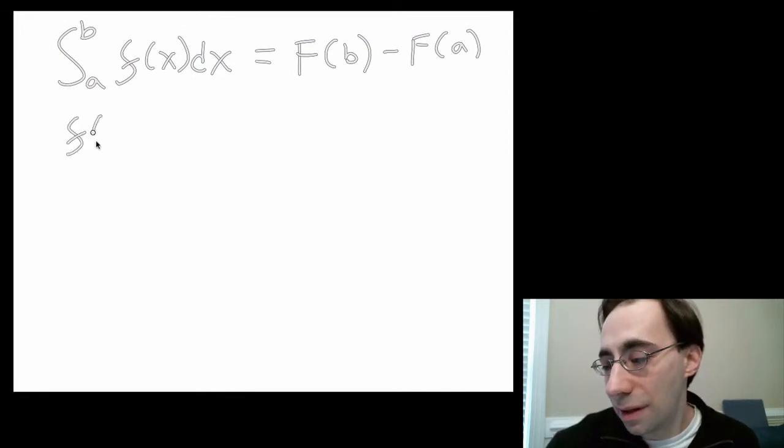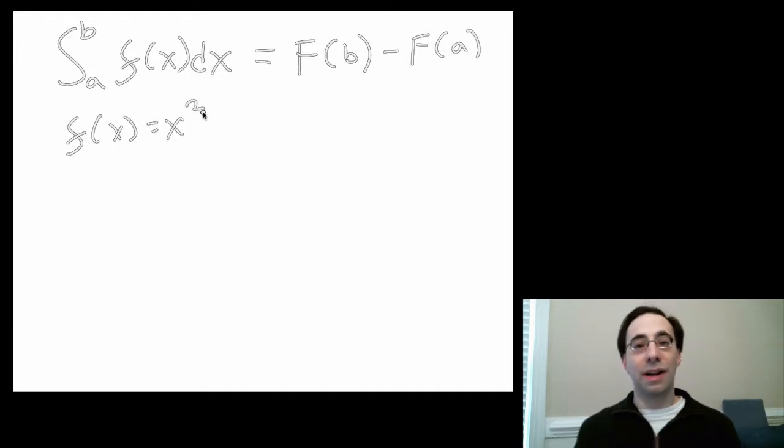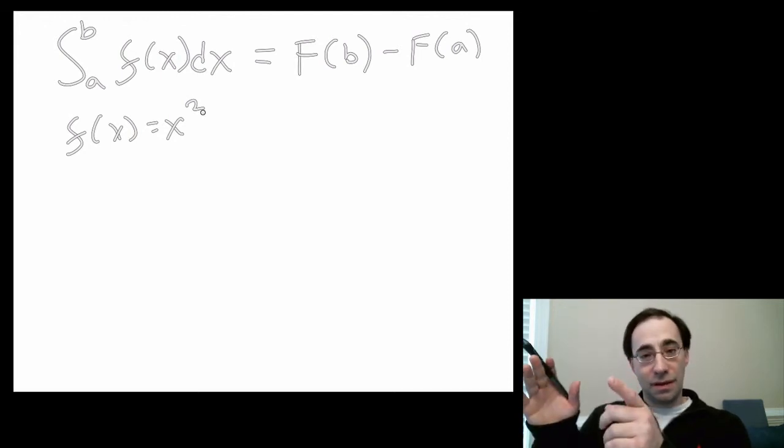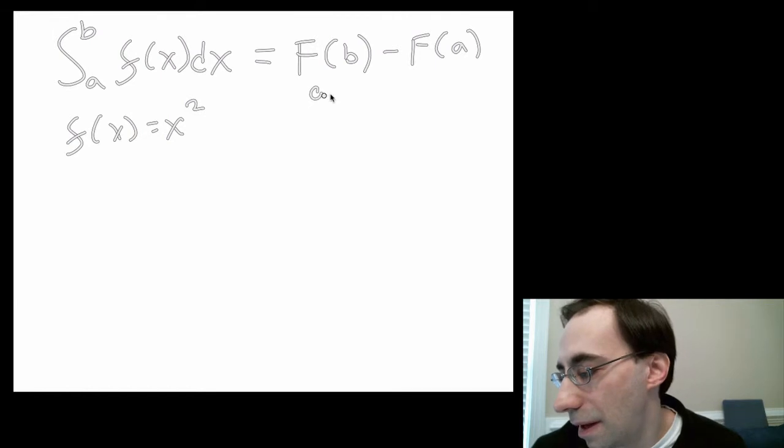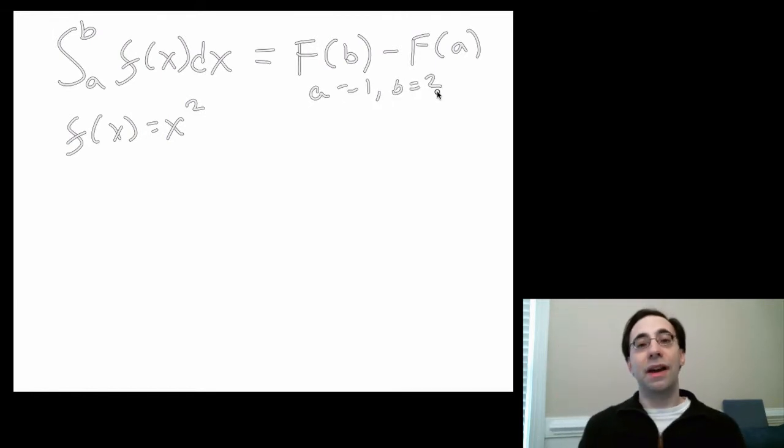Let's start with the function x². Let's say we want to integrate, we want to figure out the area under a parabola from a to b. And let's say a equals 1 and b equals 2. So we want to figure out the area under the parabola from 1 to 2. How do we go about doing that? Well, first, we must figure out what the antiderivative is.